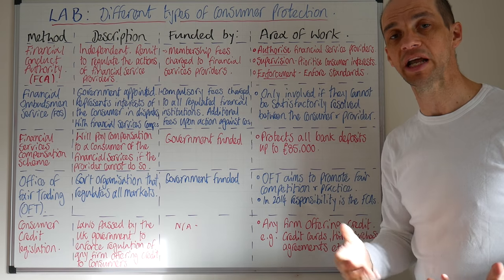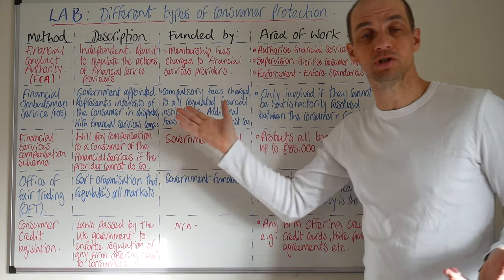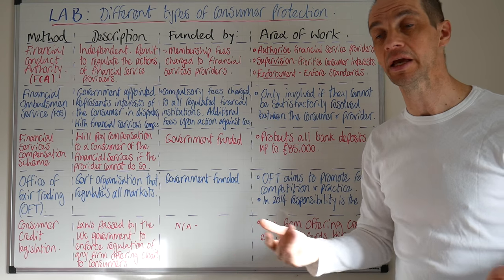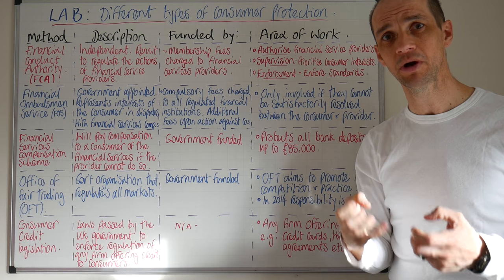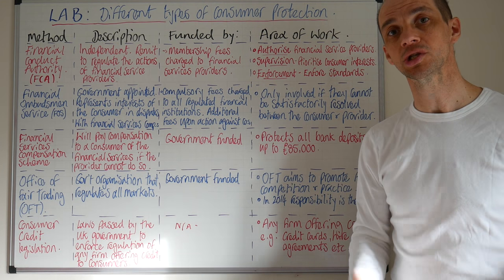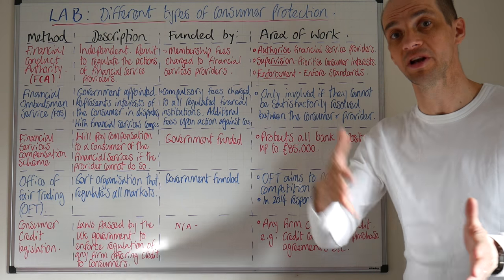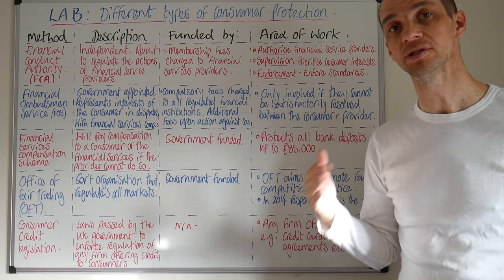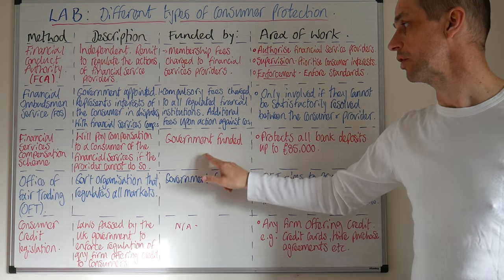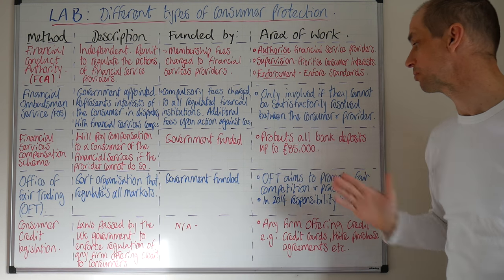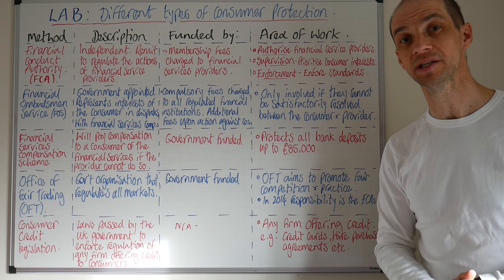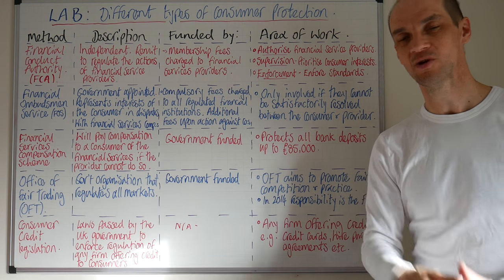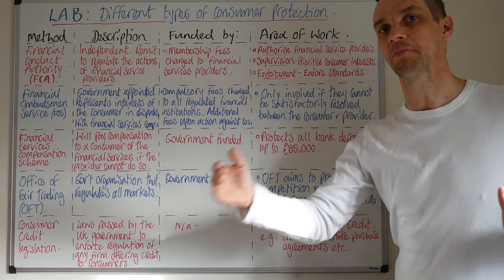Moving on, we then have the Financial Services Compensation Scheme. This will ensure that consumers are compensated in the event of any sort of bank failure. If there was a bank crash and you couldn't get your money out, this scheme guarantees that you will get all of your money back up to £85,000. It will pay compensation to a consumer if the financial services provider cannot do so. It's government funded and it protects all bank deposits up to £85,000. So if you have savings greater than that, you need to split it between a couple of different banks.